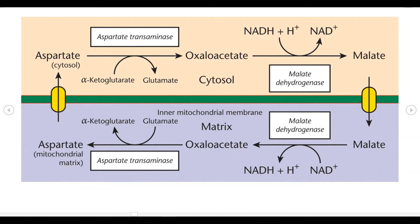यह shuttle system continue रहता है। यह malate-aspartate shuttle system heart, liver, और kidney में पाया जाता है। Now, since the malate-aspartate shuttle system forms NADH inside the mitochondria, इस shuttle system में तीन ATP molecules are produced from one NADH2.